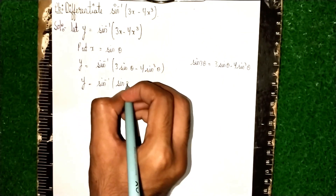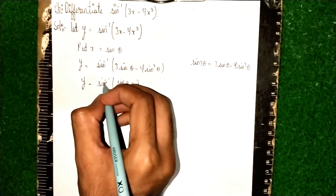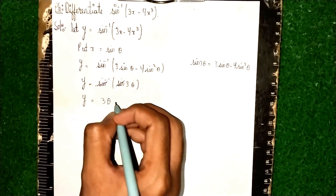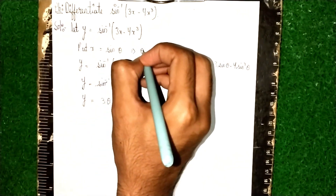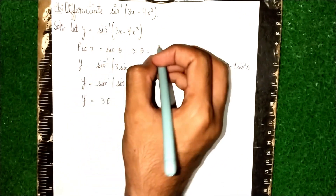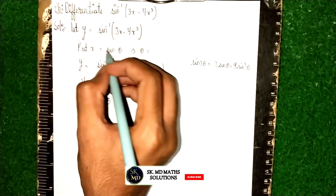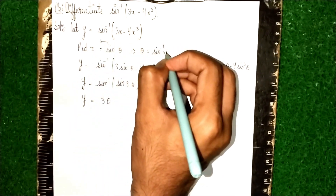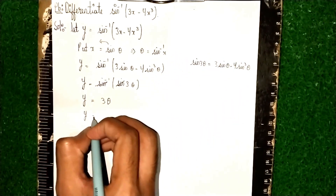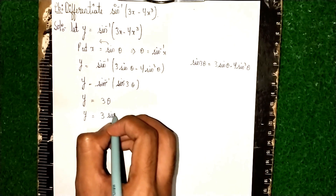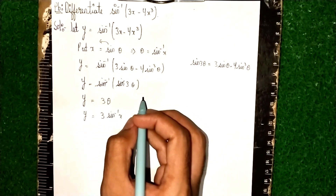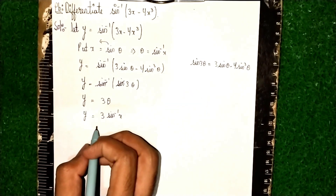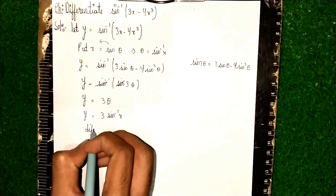Here, sin and sin⁻¹ cancel each other, so y = 3θ. Now back-substituting — since x = sin θ, we have θ = sin⁻¹ x. Therefore y = 3 sin⁻¹ x. Don't get confused: we are simply substituting θ = sin⁻¹ x.